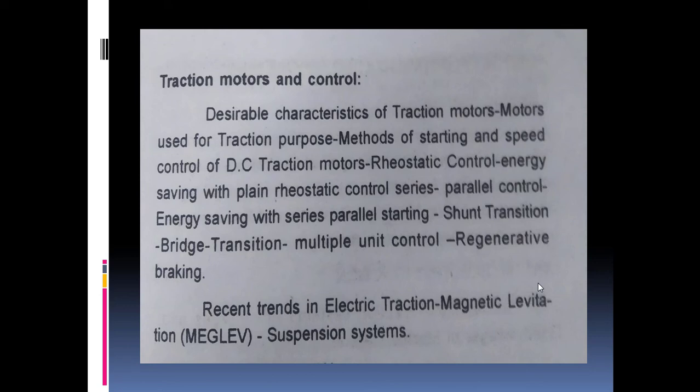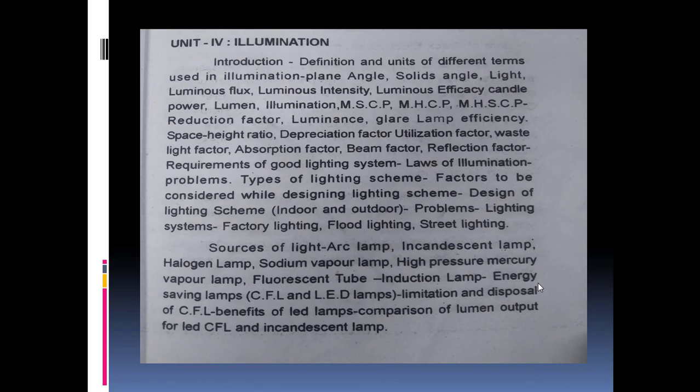Let's look at the light — four units are for Illumination. We know what tubelight, CFL, and LED are. It also covers mercury and sodium vapor lamps. You can see the light on this; there is an arc lamp and a halogen lamp. You can see the benefits and advantages.